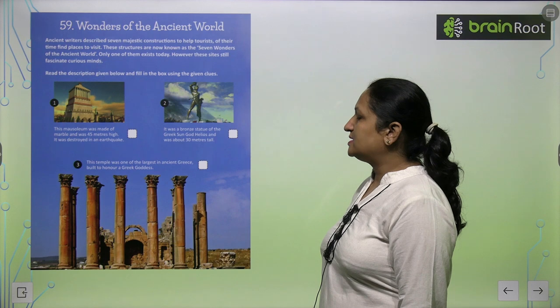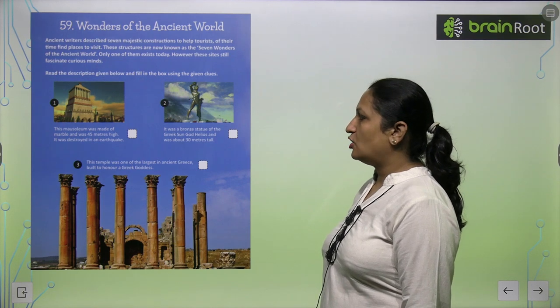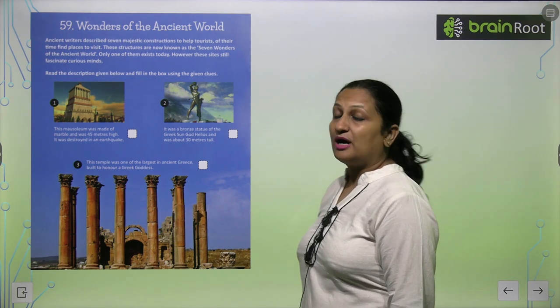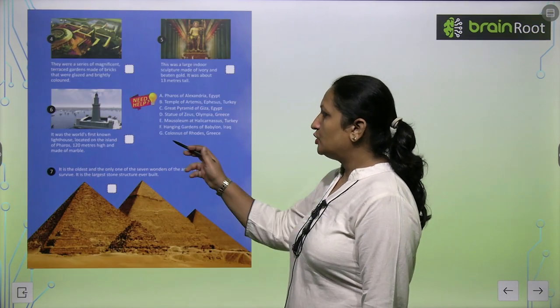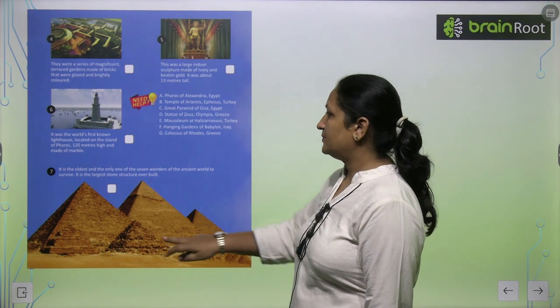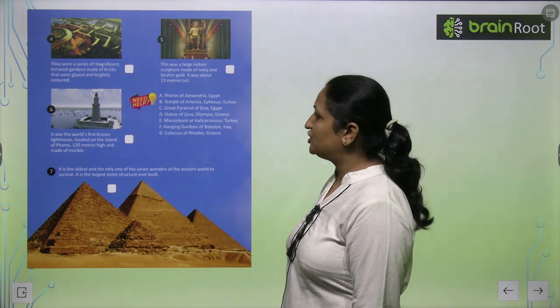This was a bronze statue of Greek sun god Helios and was about 30 meters tall. This is the Colossus of Rhodes, Greece. You can write here number G.